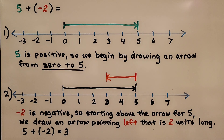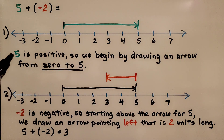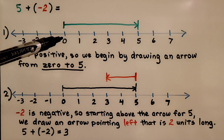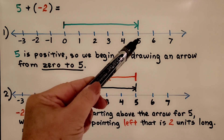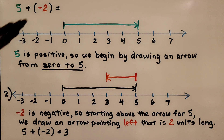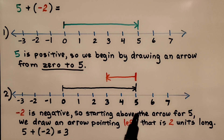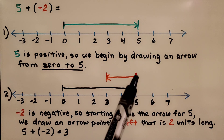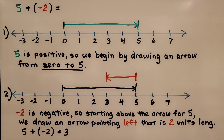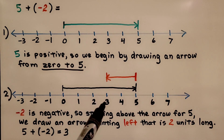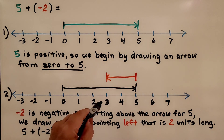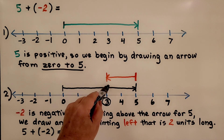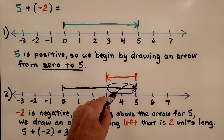So here's what we did: we had positive 5 plus negative 2 and needed to find the sum. Since 5 is positive, we draw an arrow from 0 to positive 5. Since negative 2 is negative, we start above the arrow for 5 and draw an arrow pointing left that is 2 units long. This brings us to positive 3, which is our sum. This arrow for negative 2 canceled out part of the other arrow.